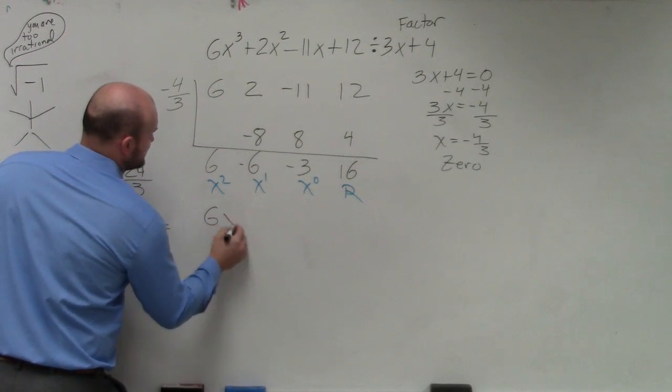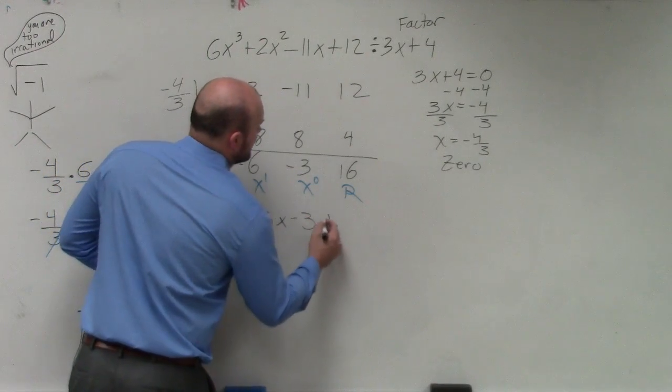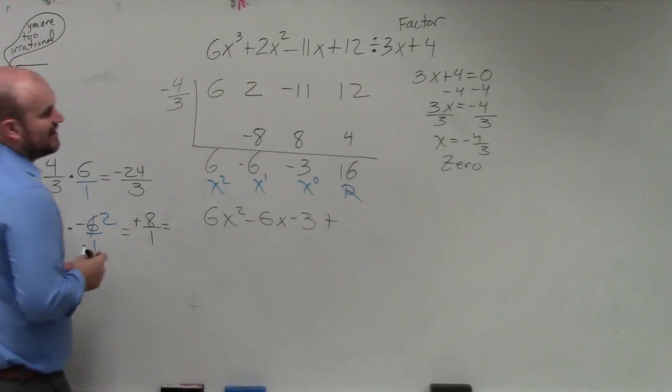Your final answer is 6x squared minus 6x minus 3. And then remember, always take your remainder divided by your divisor.